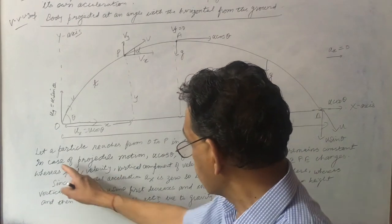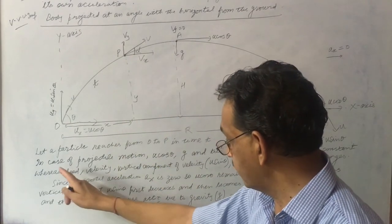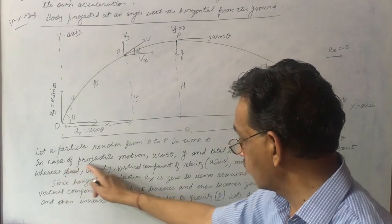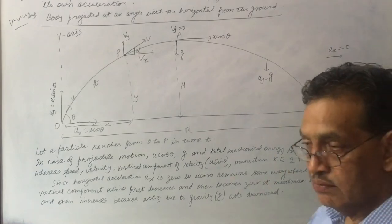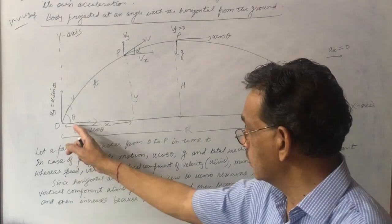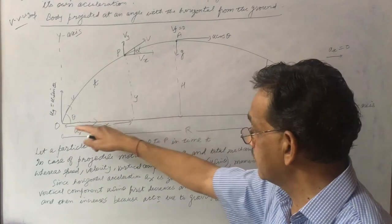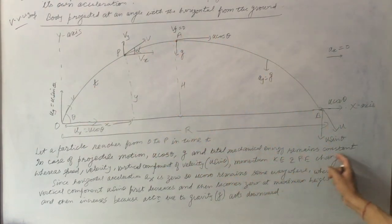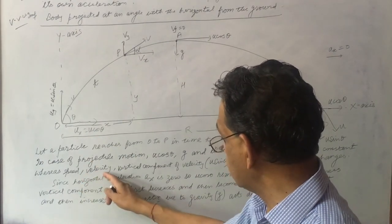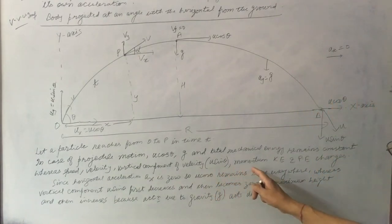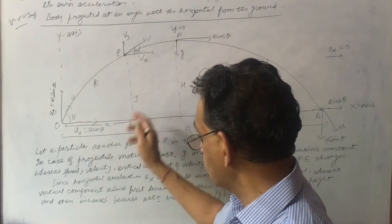Let a particle reach from O to P in time t. In projectile motion, three things remain constant: u cos θ (horizontal velocity), g (acceleration due to gravity), and total mechanical energy.